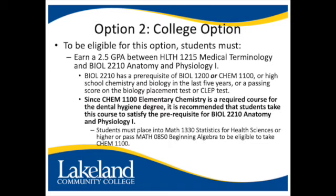Option two is the college option. To be eligible, students must earn a 2.5 GPA between Health 1215 Medical Terminology and Biology 2210 Anatomy and Physiology One. Biology 2210 has a prerequisite of Biology 1200 or Chem 1100, or high school chemistry and biology in the last five years, or a passing score on the biology placement test or CLEP test.